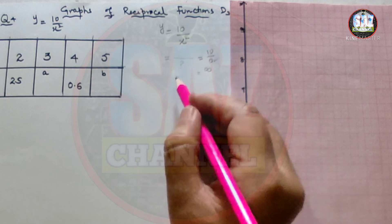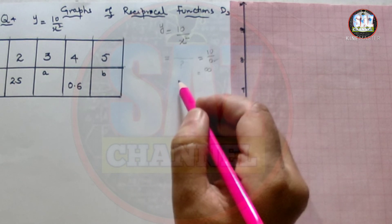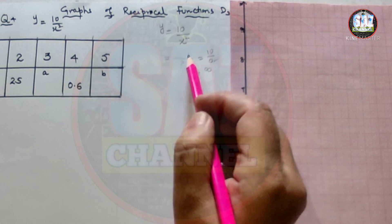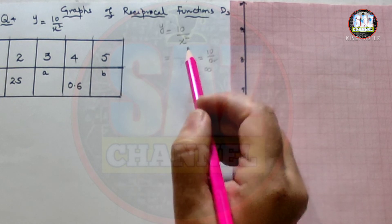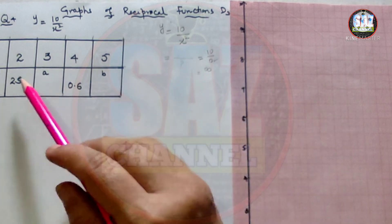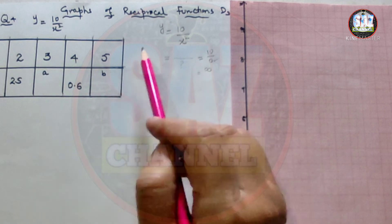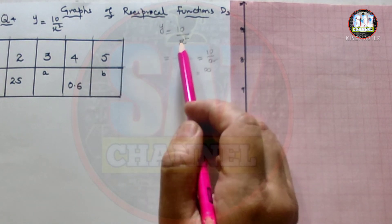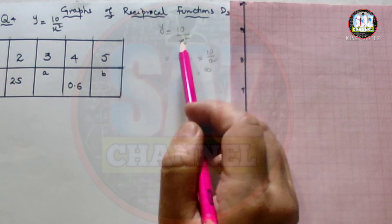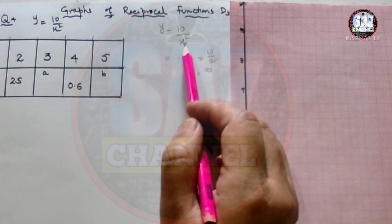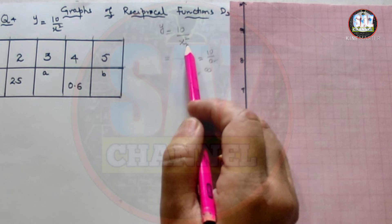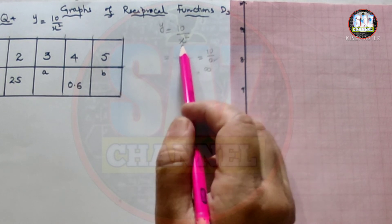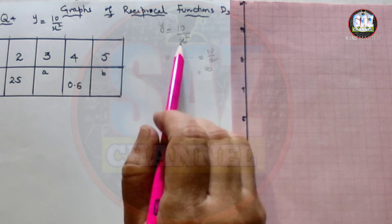All values that make the denominator zero are called points of discontinuity. That's why, when looking at the table of values for such fractional functions, you will not find those x values in the table which can make the denominator zero. This is one of the most important points that students should have a clear idea about.